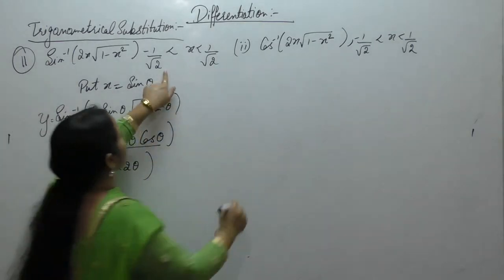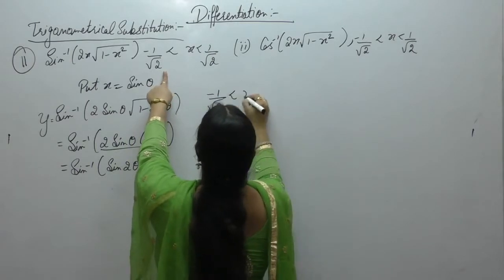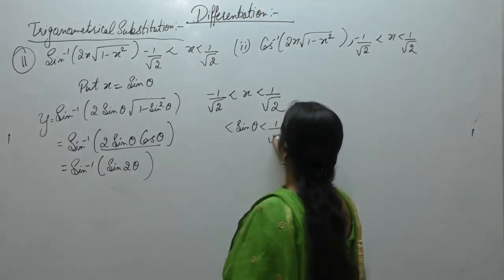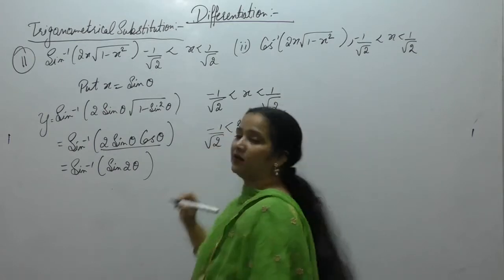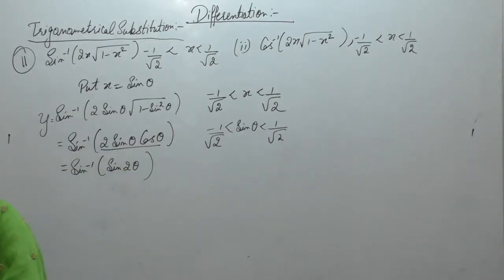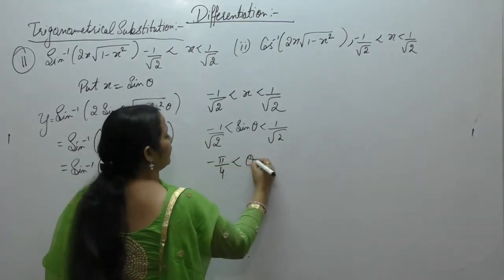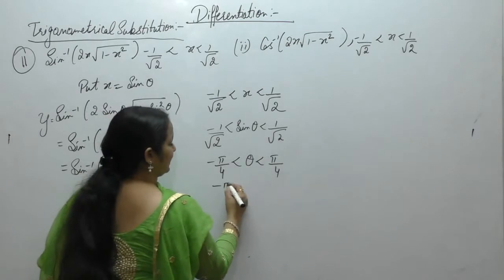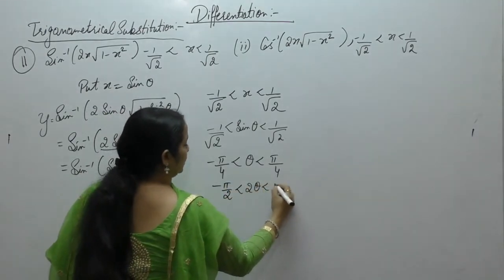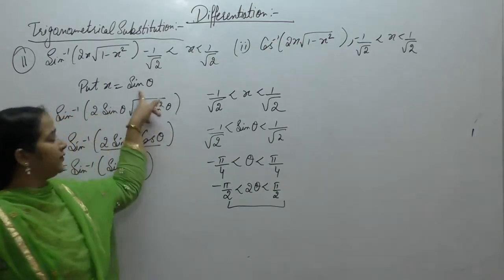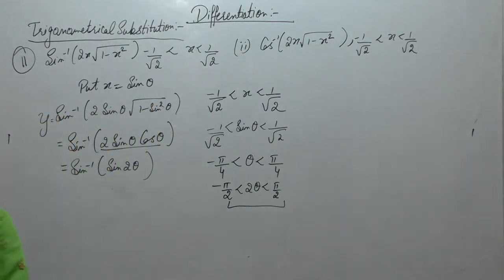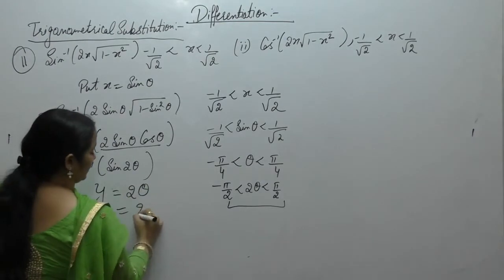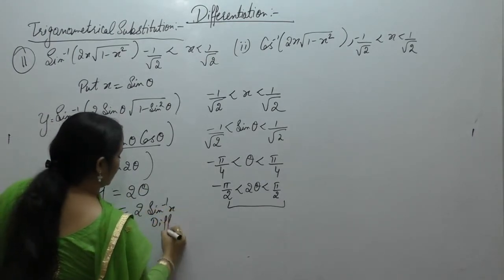The limits given are minus 1 upon root 2 less than x less than 1 upon root 2. Since x equals sine theta, and 1 upon root 2 is the value of sine π/4, we get minus π/4 less than theta less than π/4. The angle is doubled, so multiply by 2: minus π/2 less than 2 theta less than π/2. Since sine inverse sine 2 theta is valid in this range, y equals 2 theta, and theta equals sine inverse x.